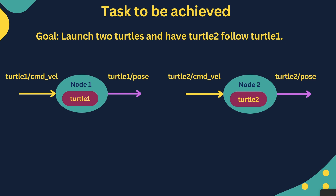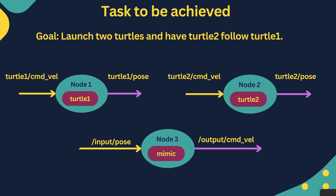This entire process has to be done by launching just one launch file. We have one node for turtle1 which subscribes to command velocity and publishes its pose on screen. Similarly, turtle2 has command velocity as its subscriber and publishes on the topic turtle2 pose. What we want to do is take the pose information from turtle1 and give command velocity to turtle2 so that turtle2 can follow turtle1, and that will be achieved by a third node already written in the turtlesim package called mimic.